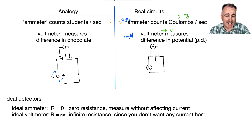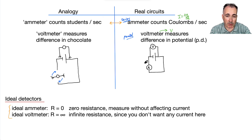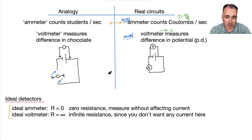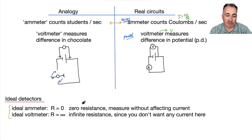We've got something called ideal detectors. An ideal ammeter — the one that measures current — we want its resistance to be zero. In other words, we want to allow the coulombs to pass through it unimpeded without affecting the current. Whereas an ideal voltmeter, because it's connected in parallel, we want as little as possible of the coulombs to divert into it — which means we want its resistance to be super high, like infinity. The voltmeter measures a difference in chocolate and the ammeter measures students per second.